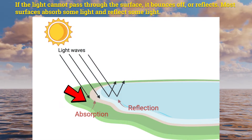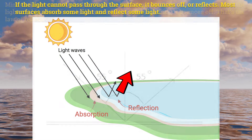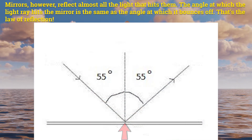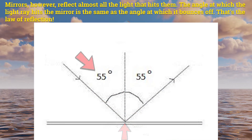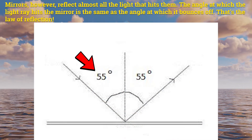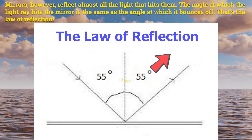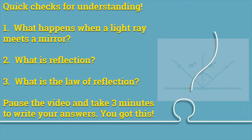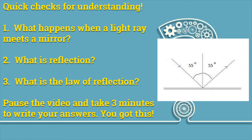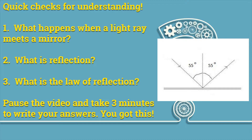Most surfaces absorb some light and reflect some light. Mirrors, however, reflect almost all the light that hits them. The angle at which the light ray hits the mirror is the same as the angle at which it bounces off — that's the law of reflection. Quick check for understanding: Number one, what happens when a light ray meets a mirror? Number two, what is reflection? Number three, what is the law of reflection? Pause the video and take three minutes to write your answers.